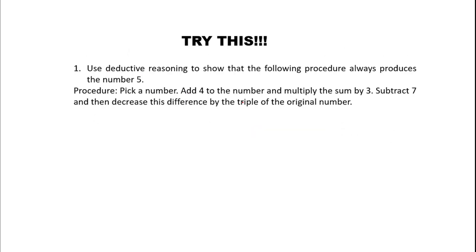Try this: use deductive reasoning to show that the following procedure always produces the number 5. Pick a number, add 4, multiply the sum by 3, subtract 7, then decrease the result by triple the original number. That's all for today. Thank you for watching this YouTube channel. I hope you learned something. Please don't forget to subscribe. Thank you, God bless — and that's all about deductive reasoning.